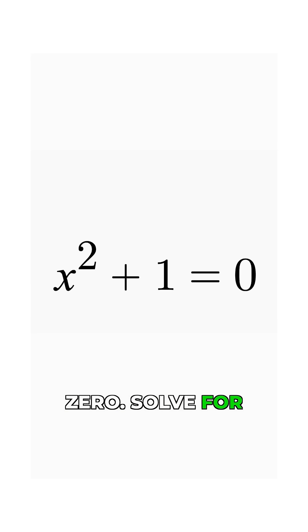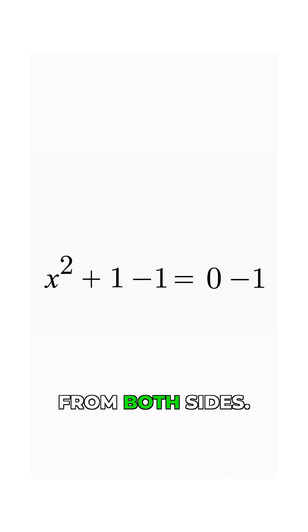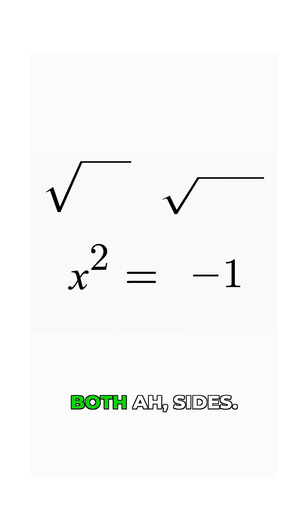Okay, x squared plus 1 equals 0. Solve for x. Go. Oh, this is easy. So we can take away 1 from both sides. Yep, and then? Then square root both sides.